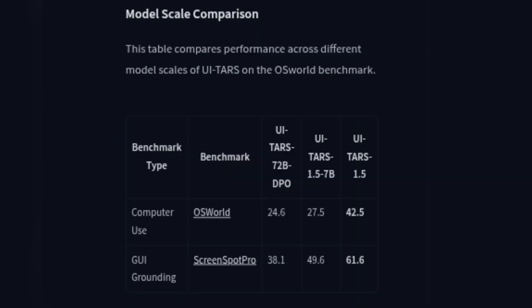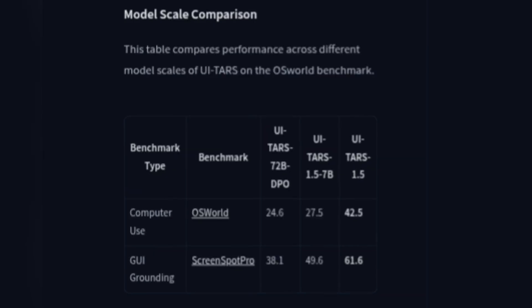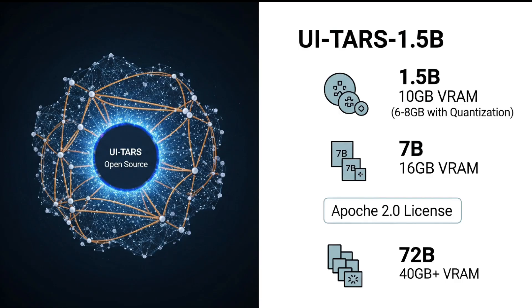And here's the craziest part — you'd think a bigger model would be better, right? Wrong! The smaller 1.5B version of UiTars, which scored 42.5, actually beats the bigger 7B and even the massive 72B models on the OS World benchmark. That is amazing efficiency! The UiTars 1.5B code is already on GitHub and fully open source under the Apache 2.0 license. To run the 1.5B model locally offline, you'll need around 10GB of VRAM, though with quantization it can run on 6 to 8GB. For the 7B model, aim for 16GB. And for 72B, you're looking at 40GB or more.